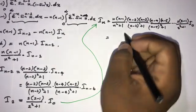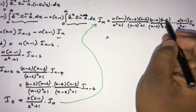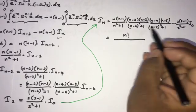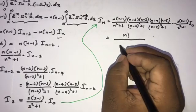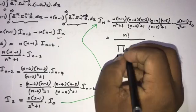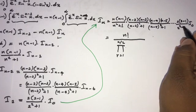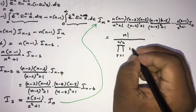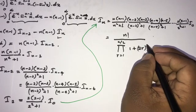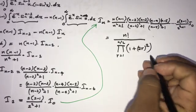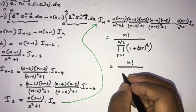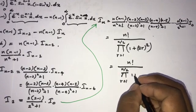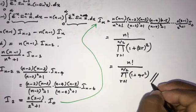So we can write I_n equals n factorial over the product (capital Pi) from r equals 1 to n over 2 of (1 plus 4r squared). This is the final answer, confirming the formula stated at the beginning of the video.